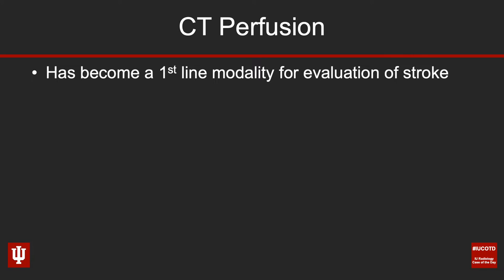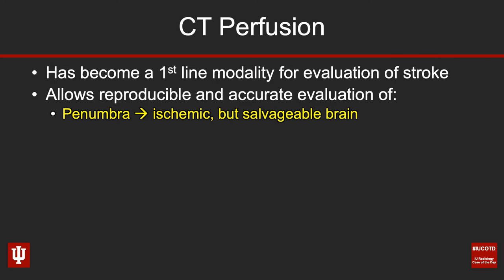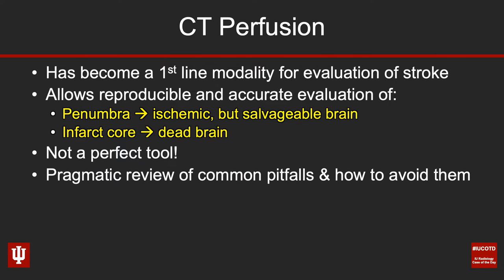Perfusion CT has really become a first-line modality for the evaluation of stroke. It allows us to very reproducibly and quite accurately evaluate the brain for penumbra, which is ischemic but potentially salvageable brain, as well as infarct core, which we can think of as dead brain. But it's not a perfect tool, and over the next several minutes I hope to provide a very pragmatic review of some of the common pitfalls and how to avoid them.